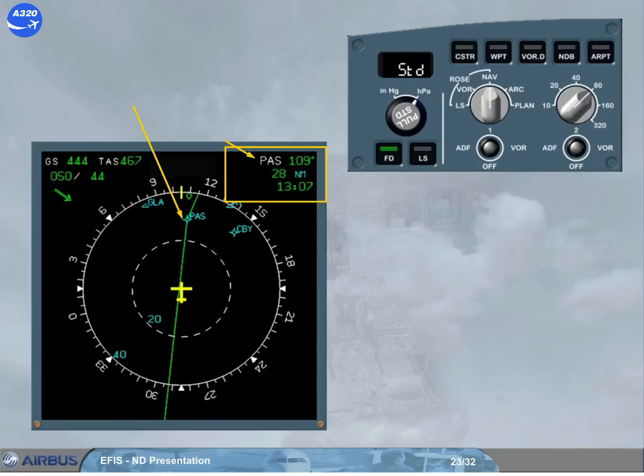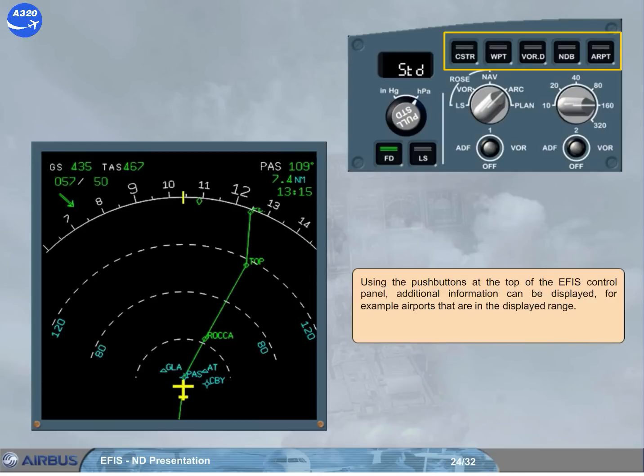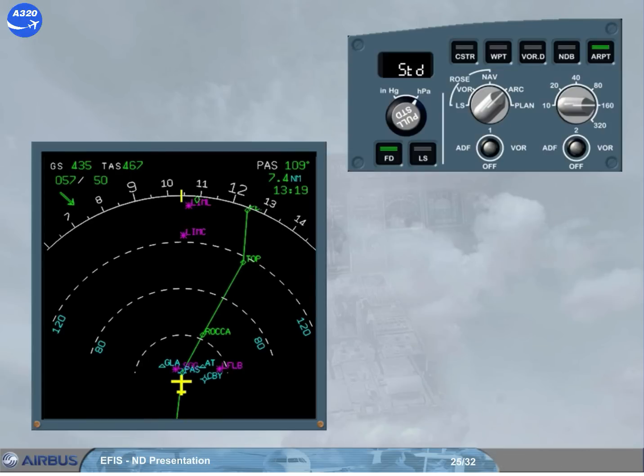The normal mode for the cruise phase is the arc mode. Click on the forward arrow to select the arc mode with the range of 160 nautical miles. Using the push buttons at the top of the EFIS control panel, additional information can be displayed. For example, airports that are in the displayed range. Select airport. A green light illuminates in the push button. On the display, the airports contained in the aircraft's database and within the area are shown. This is a useful feature when considering diversions.